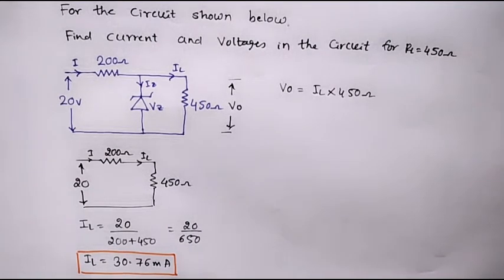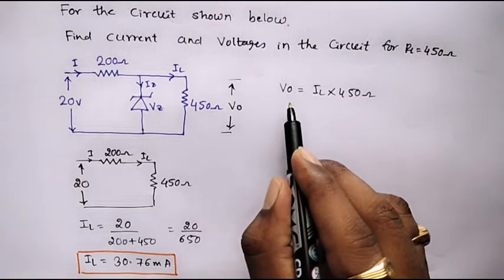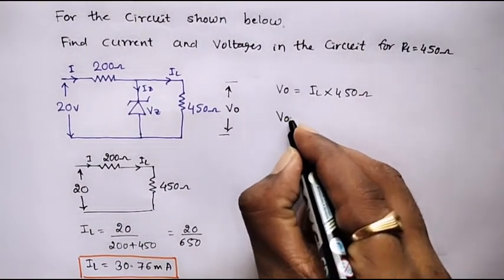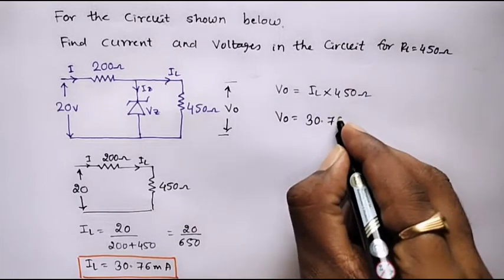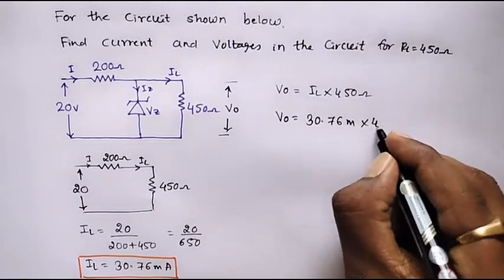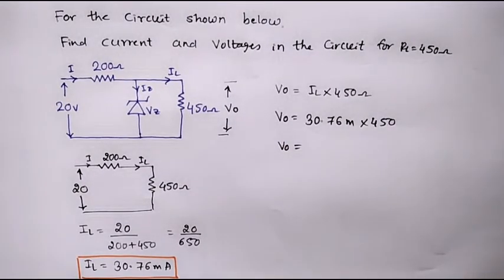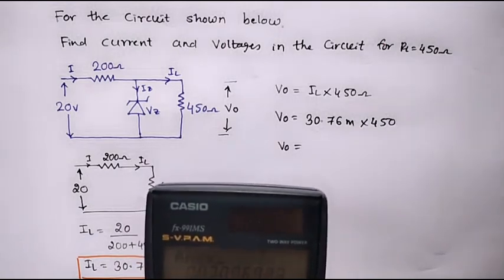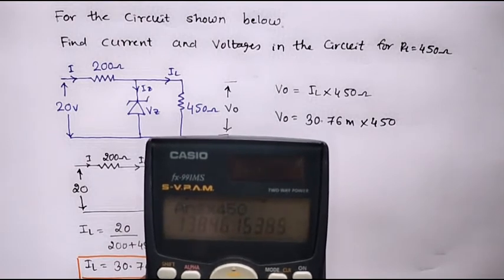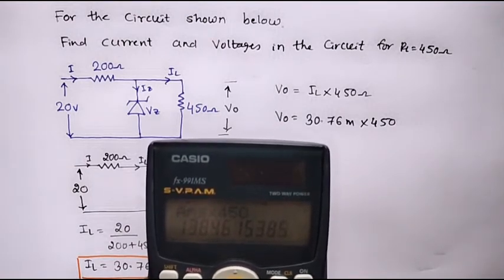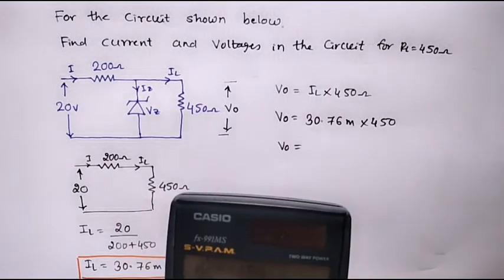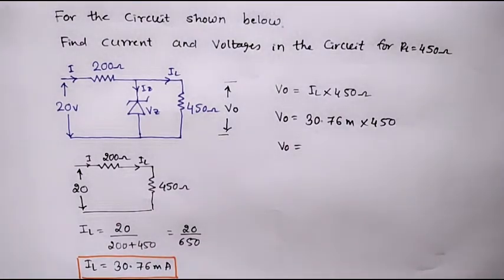With the value of IL we can easily find the output voltage VO. Therefore, VO equals 30.76 milliamps multiplied by 450 ohms, which gives VO equal to 13.84 volts.